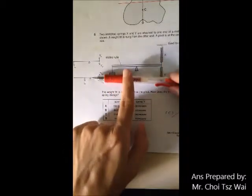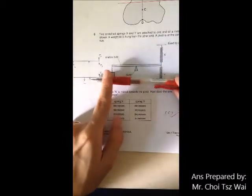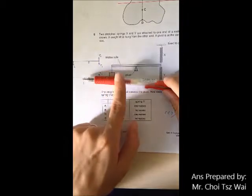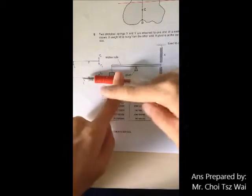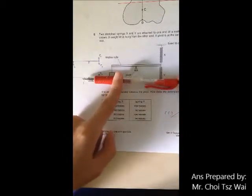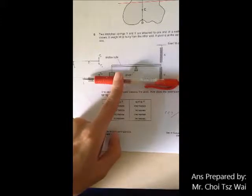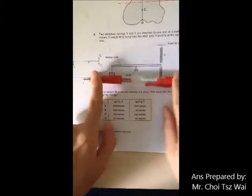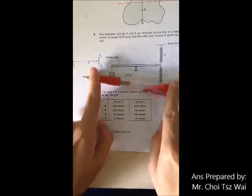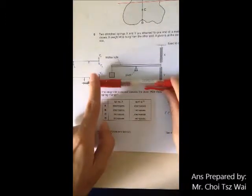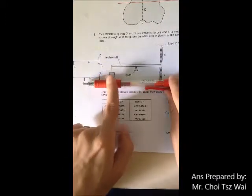So what happens is that initially both the moments here and here are balanced. When you have this reduced, at that instance the moment at this point would be larger than this one.